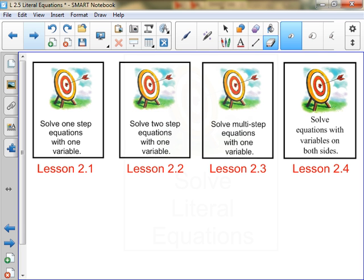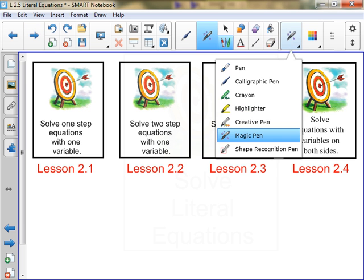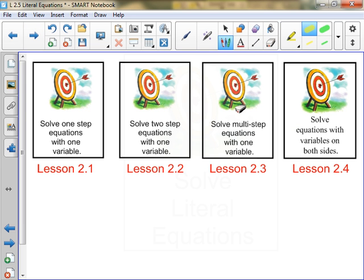So if you recall, what we've done in Chapter 2 so far is we first solved one-step equations with one variable. Next, we looked at two-step equations, still with one variable. And then we added a couple more steps in multi-step equations with one variable. And then we put variables on both sides of the equal sign. Notice all of these lessons only involved one variable.